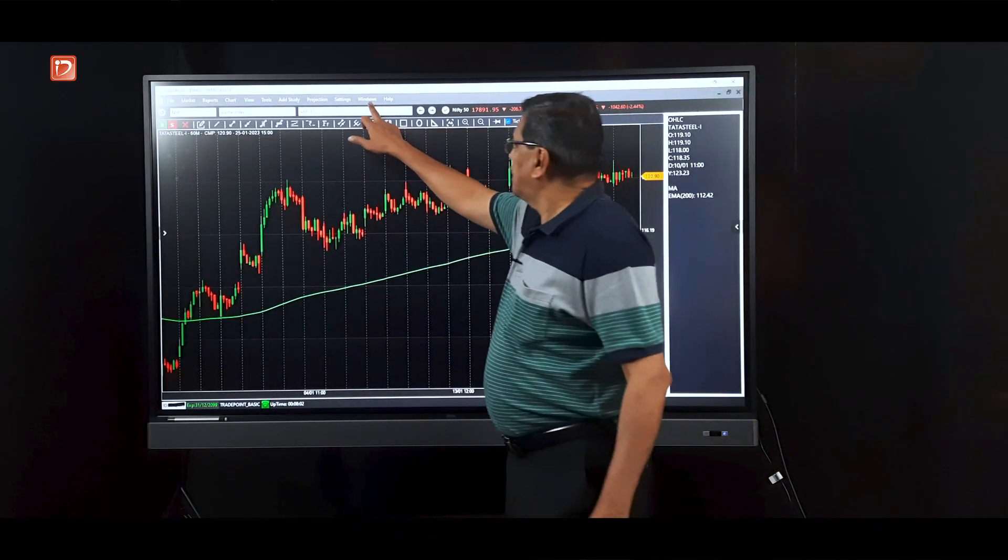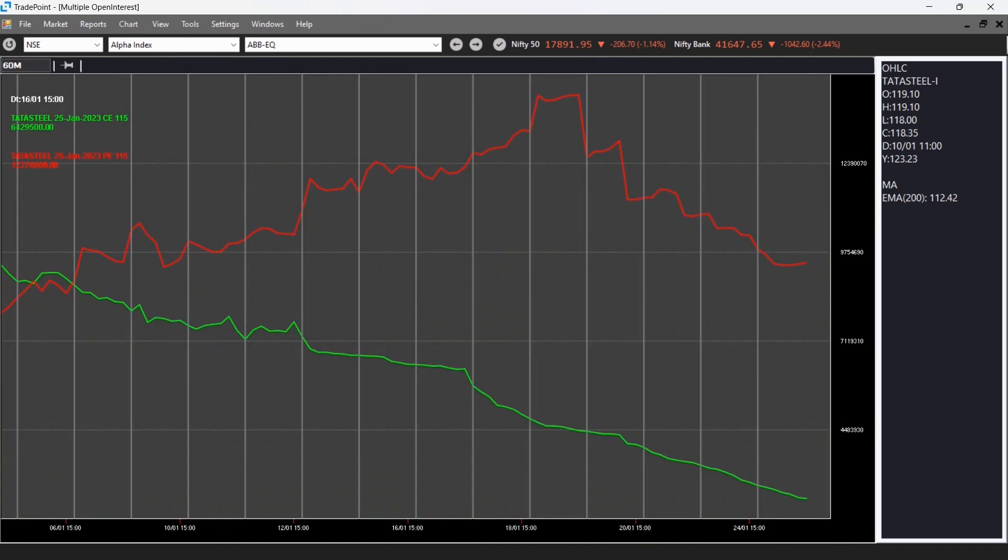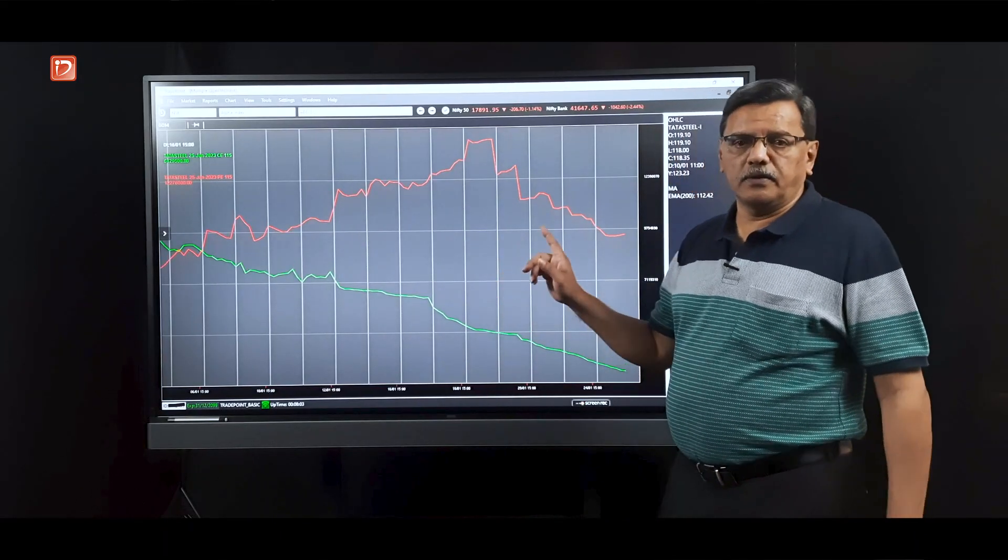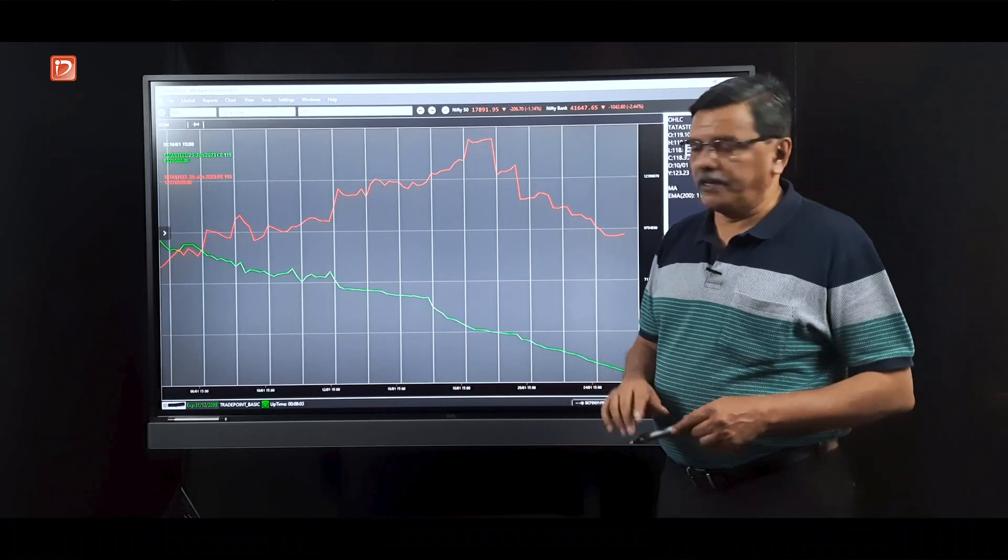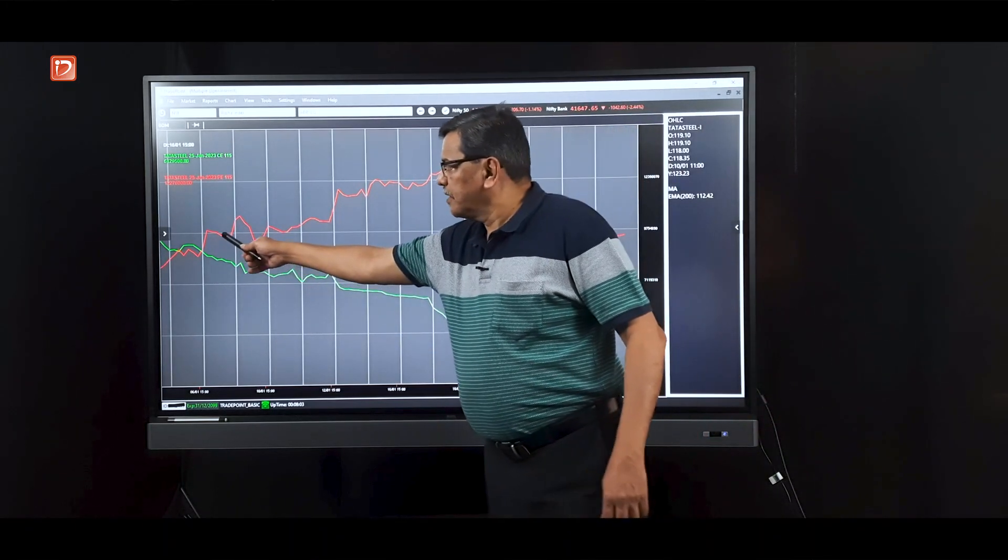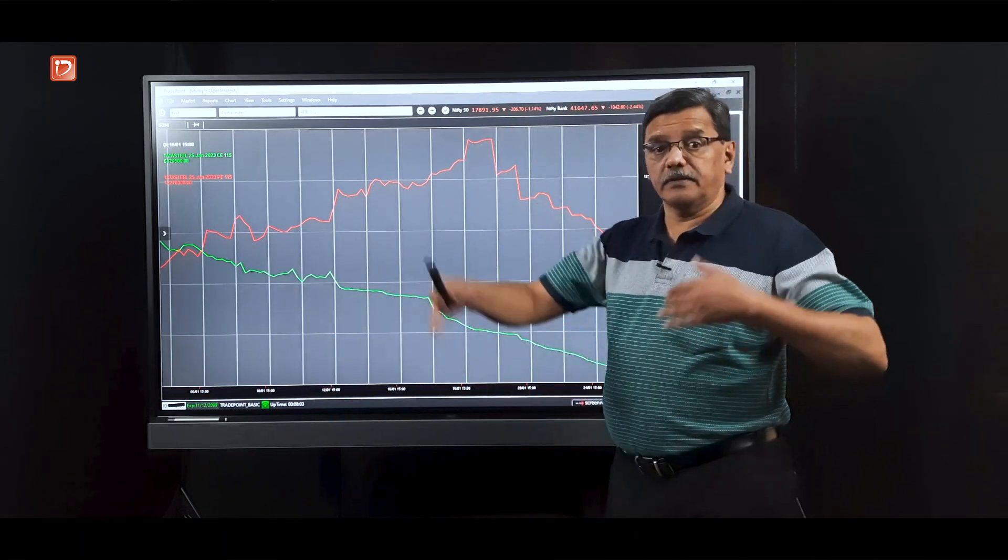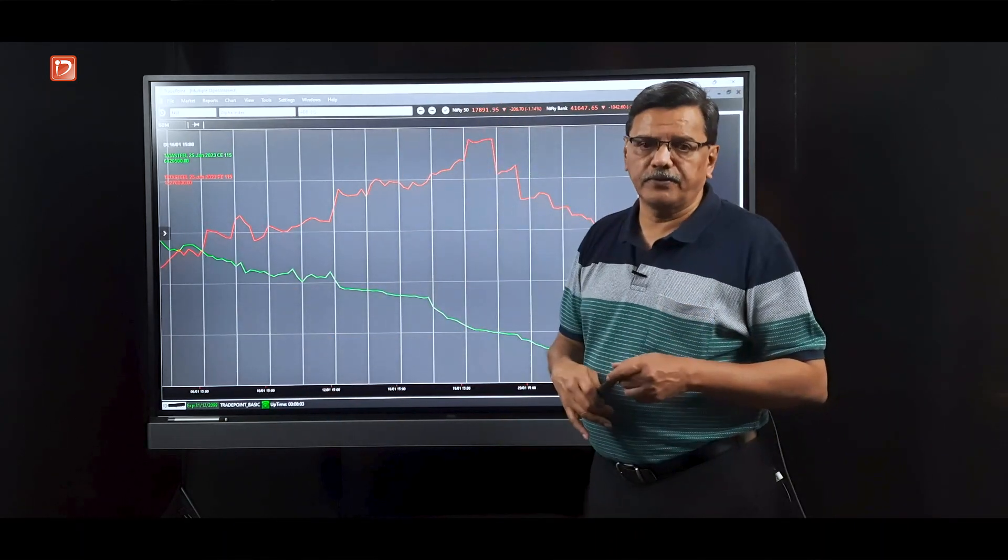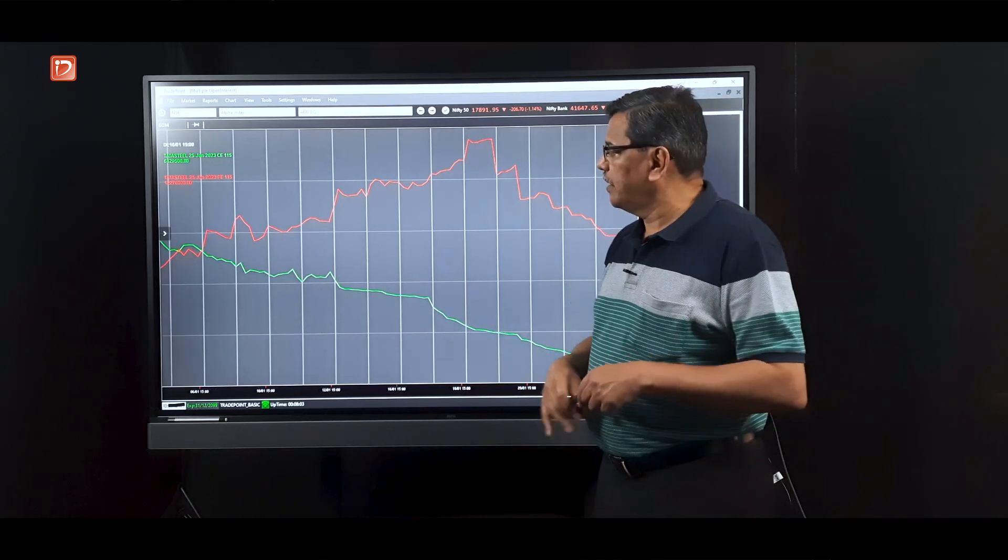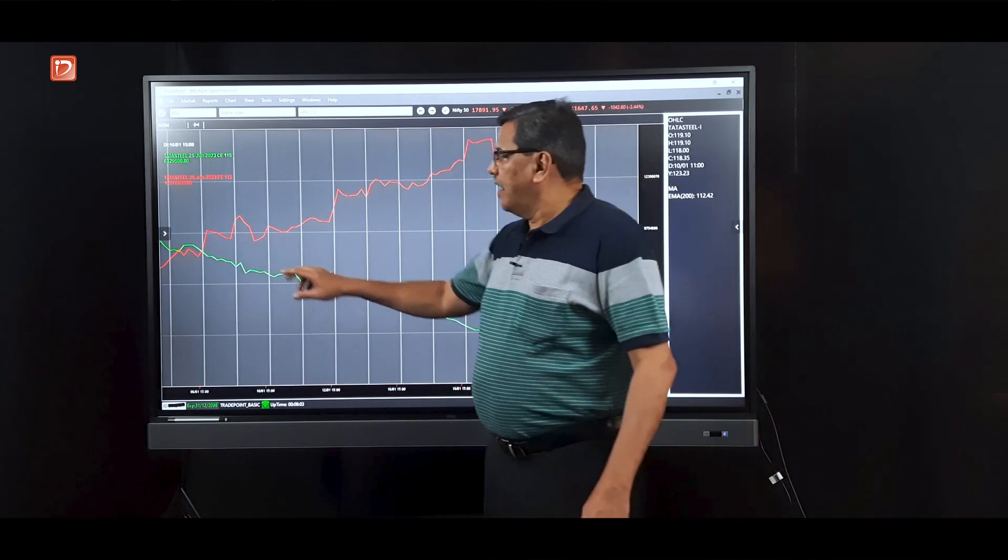And then the stock came down again, corrected a bit, it came down to about 115 or so levels. And when it came to 115, what happened? So let's have a look at the multiple open interest at 115. So this is the put and call OI at 115 strike price, and that was definitely not bearish. So if you see here, the put was higher than the call. At 120, it was exactly the opposite and the green was way ahead of higher than the put OI.